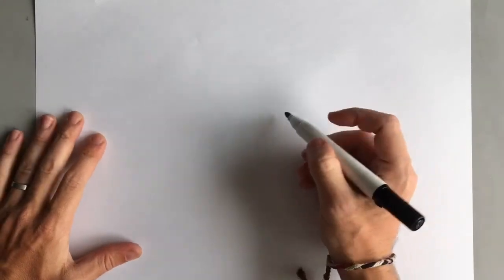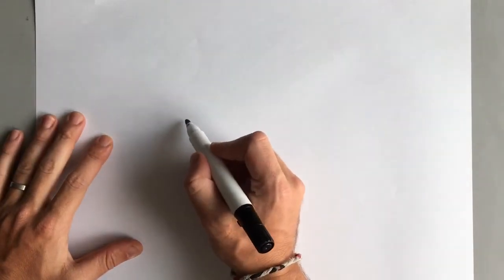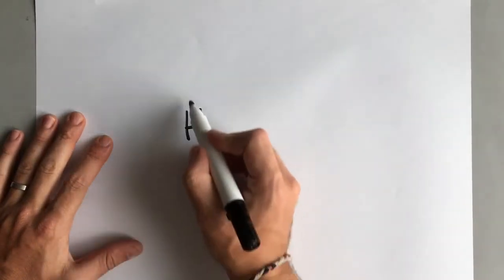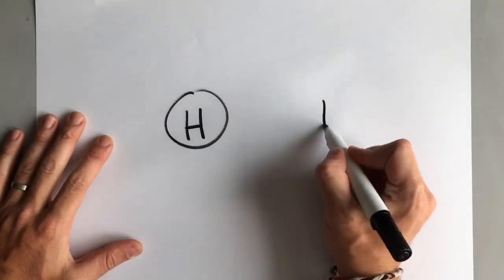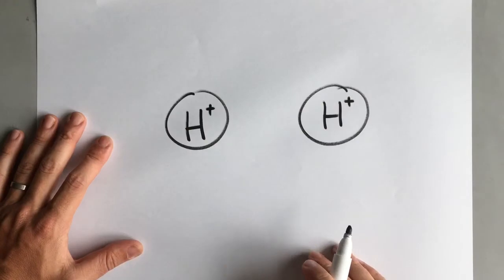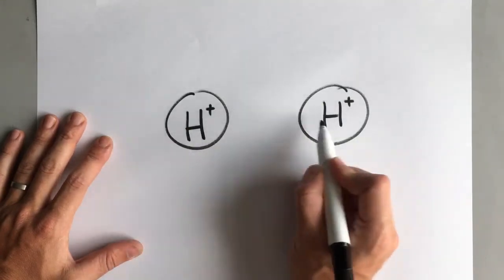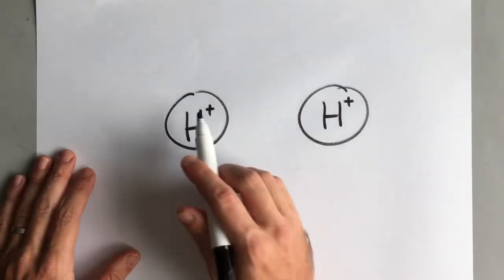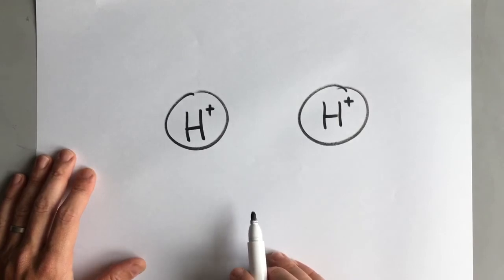Now we can look at some examples of quantum tunneling. The first one is in the Sun. In the Sun we have hydrogen nuclei, and we know that hydrogen nuclei are positively charged, and so there is an electrostatic repulsion there. Positive charge repels positive charge.